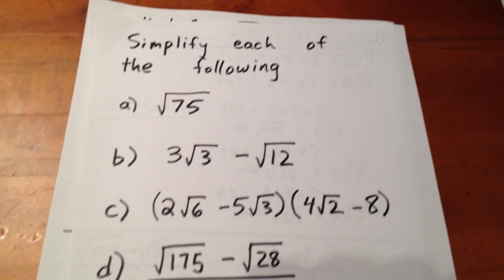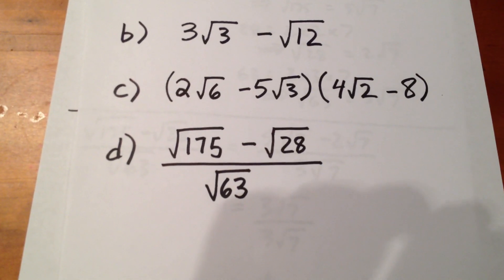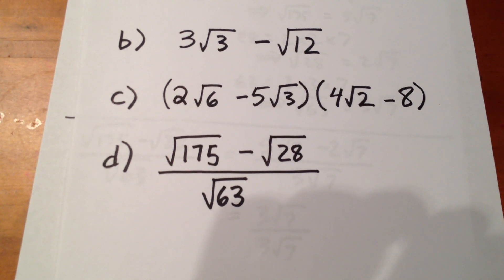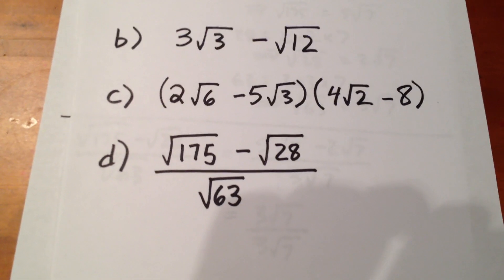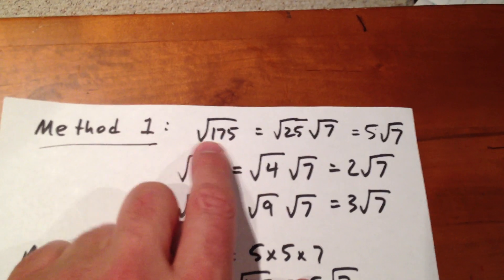Okay, we're going to focus on simplifying expression D: root 175 minus root 28 all over root 63.